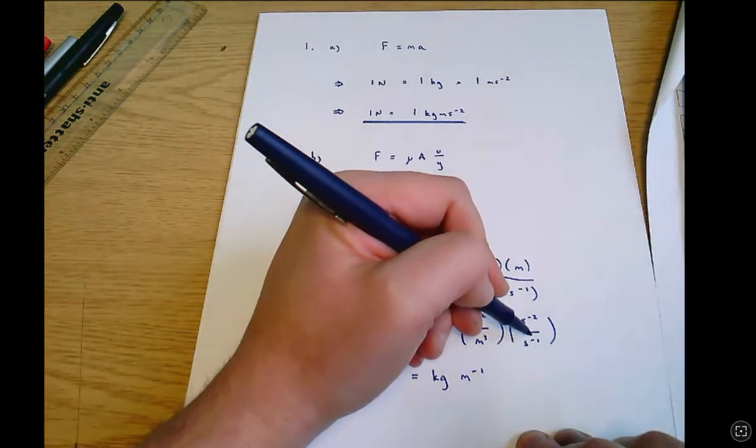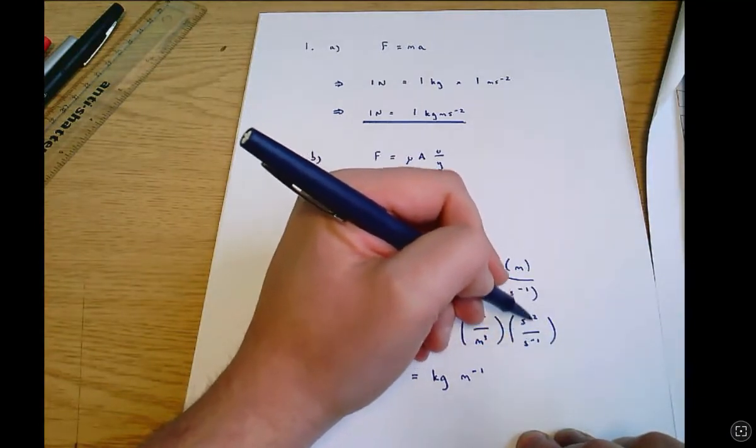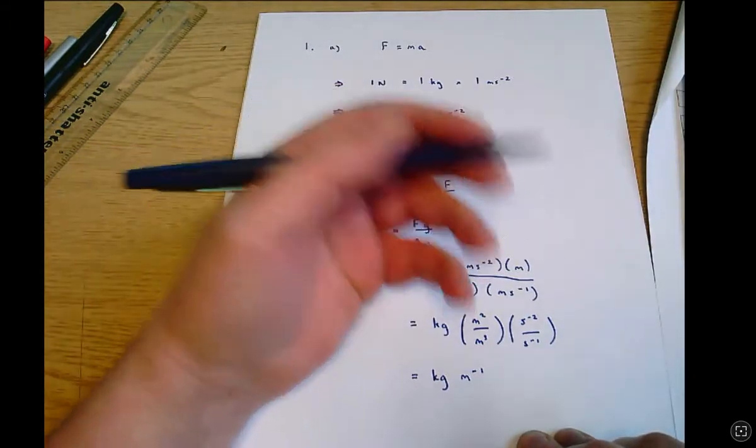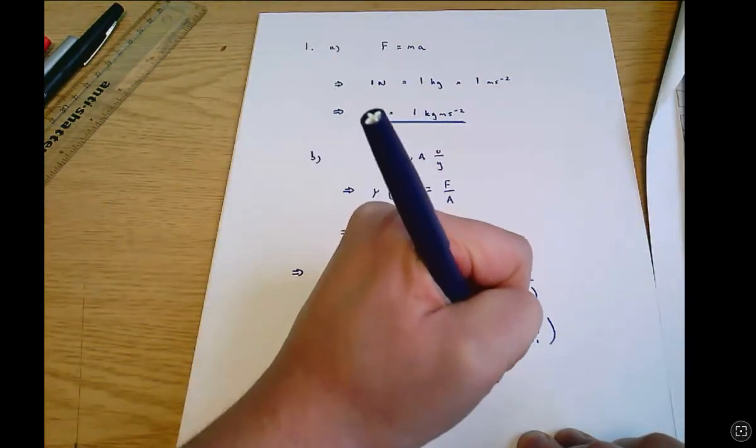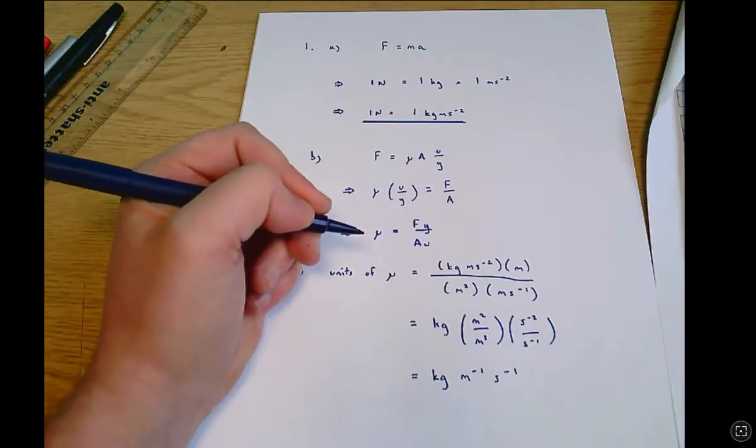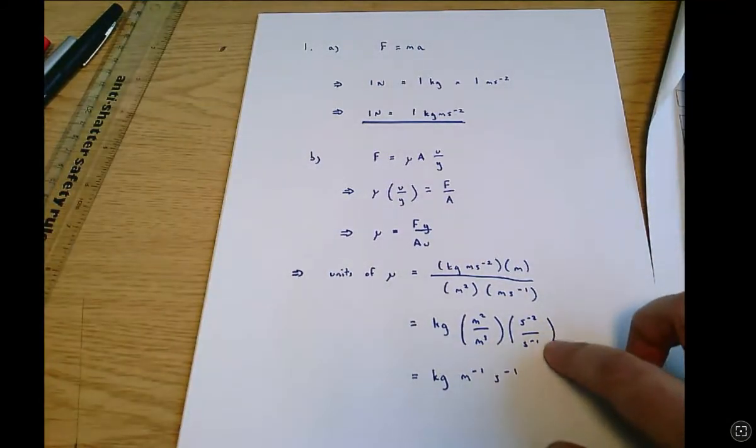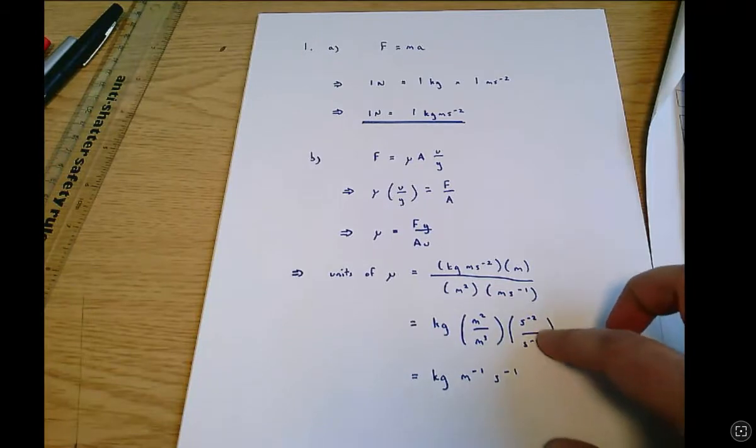Following the same principle here if I subtract this power of minus one from this power of minus two, minus two minus minus one is minus two plus one so that's seconds to the minus one and I'd recommend maybe just taking some time to think about that that last one, the division is more complicated, you just need to be a bit clued up on how to work with different indices or powers.